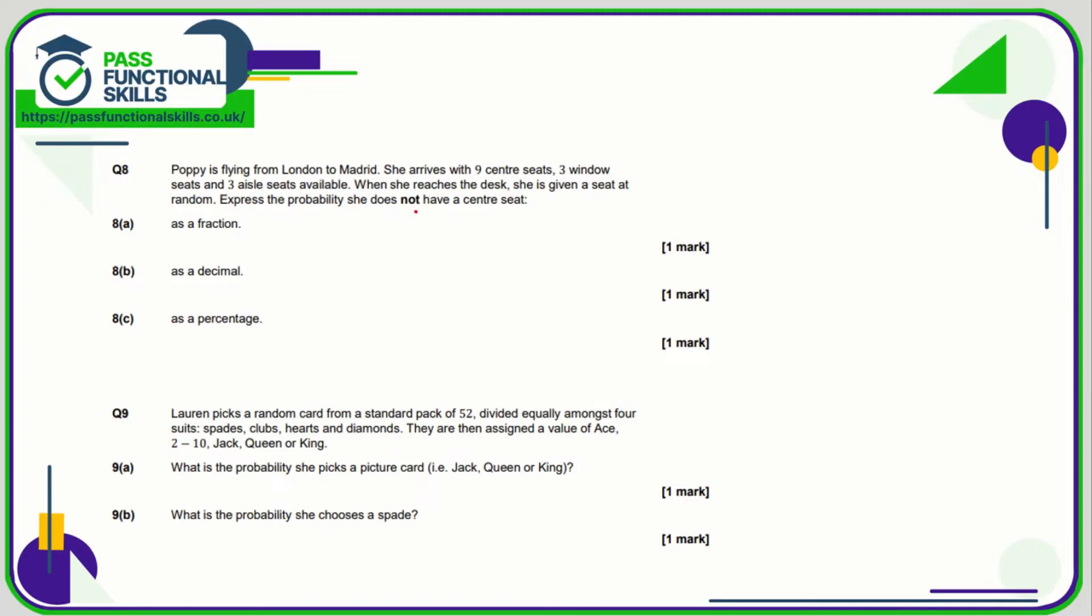For question number eight, we know that in total there are 9, 10, 11, 12, 13, 14, 15 seats available. So out of the 15, what is the probability that she does not have a centre seat? So that therefore would mean a window or an aisle seat, so that's 6 out of 15. And 6 out of 15 you can divide the top and the bottom by 3 to turn that into 2 fifths if you want.